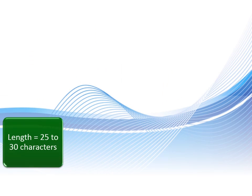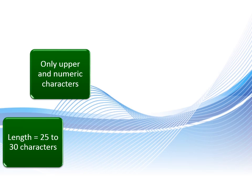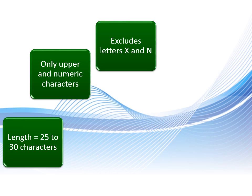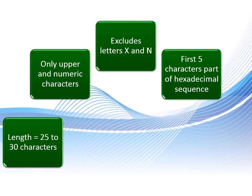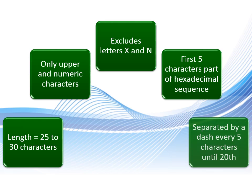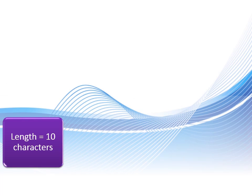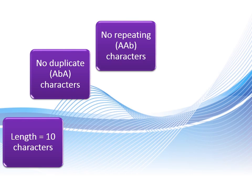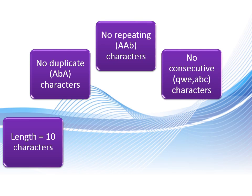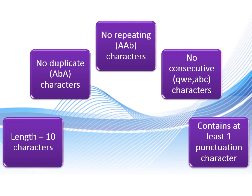Example 2: A keycode 25 to 30 characters long, consisting of only uppercase and numeric characters excluding letters X and N, with the first five characters generated sequentially starting from 00001 and presented in hexadecimal format, separated by a dash every five characters until the 20th character. Example 3: A strong password of length 10 with no duplicate, repeating, or consecutive characters and containing at least one punctuation character.